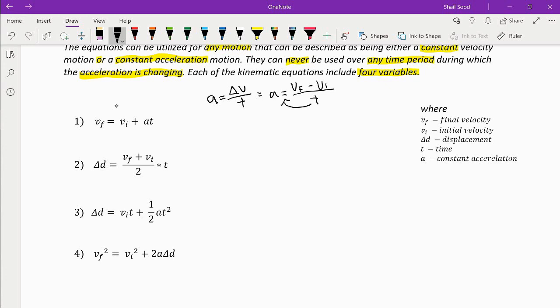If we take time on the other side, this can also be written as At is equal to Vf subtracted by Vi. If we add the initial velocity to both sides, you can calculate the final velocity by doing At plus Vi equals the final velocity, which is the first kinematic formula.